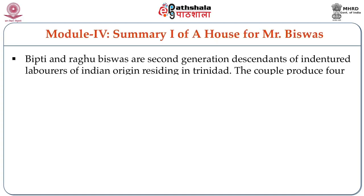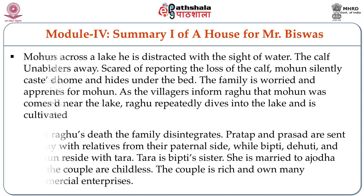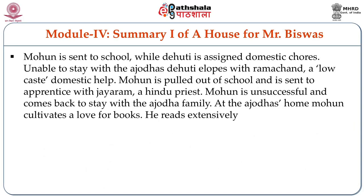Let's now look at a summary of A House for Mr. Biswas. Bipti and Raghu Biswas are second generation descendants of indentured labourers of Indian origin residing in Trinidad. With Raghu's death, the family disintegrates. Pratap and Prasad are sent to stay with relatives from the paternal side, while Bipti, Dehuti and Mohan reside with Tara — Bipti's sister — who is married to Ajodha; the childless couple are rich and own many commercial enterprises. Mohan is sent to school while Dehuti is assigned domestic chores. Unable to stay with the Ajodhas, Dehuti elopes with Ramchand, a low-caste domestic help. Mohan is pulled out of school and sent to apprentice with Jairam, a Hindu priest, but is unsuccessful and returns to stay with the Ajodha family.